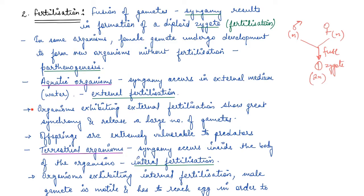Organisms that exhibit external fertilization show great synchrony — they are very much synchronized and release a large number of gametes, because there is a possibility that gametes will not fuse. The offspring formed will also be outside the body, and that is why offspring in the case of external fertilization are extremely vulnerable to predators.